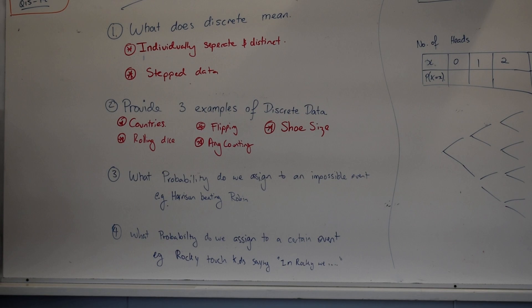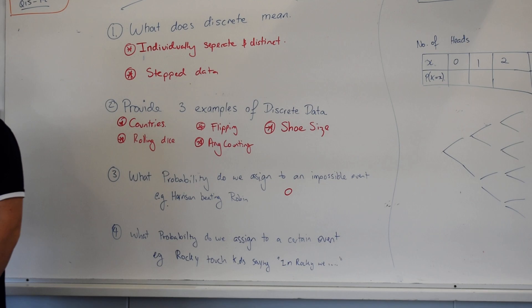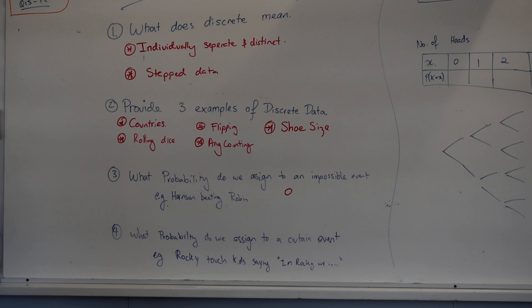What probability do we assign to something that is impossible? Zero. Zero. So an example of something that's impossible, like Harrison beating Robin in chess. Wasn't a joke. Just facts.